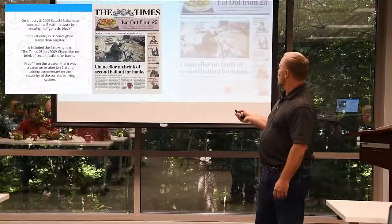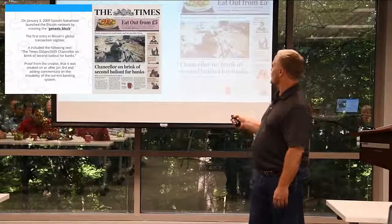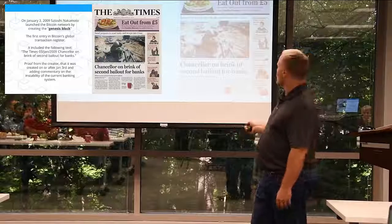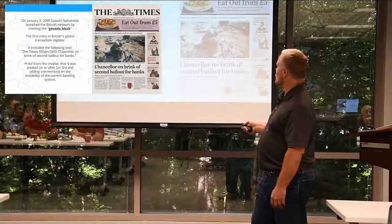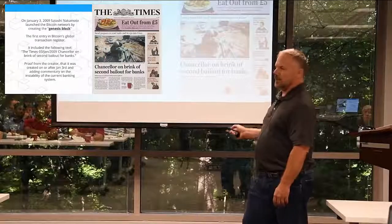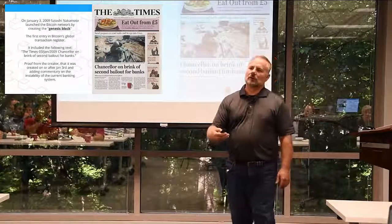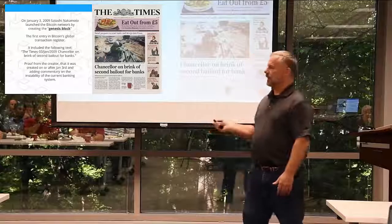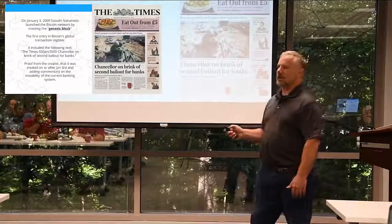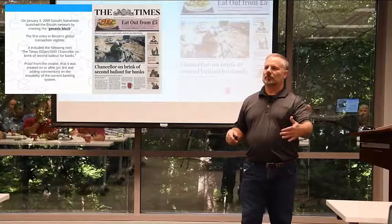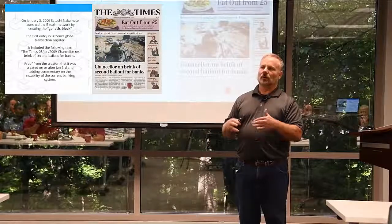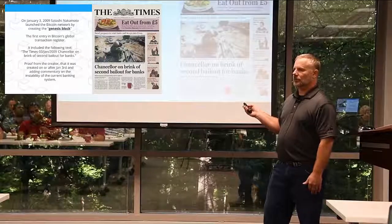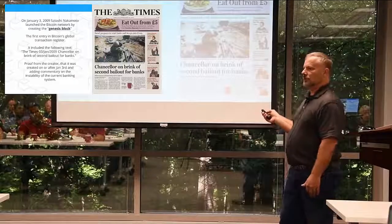Satoshi posted in the Genesis block this headline from the Times on January 3rd, 2009: 'Chancellor on the Brink of Second Bailout of Banks.' The original implementation — the launch of Bitcoin, cryptocurrency, and then blockchain — is all based on creating a distributed currency that people have control over, not financial systems and governments. The most active participants are a younger age group looking at things differently.